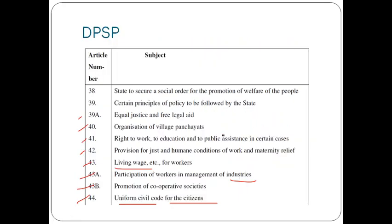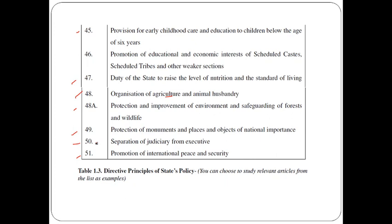Just go through these articles, and when you look at the meaning of each of them, you understand that these are ideals we want in order to bring justice and equality in the society. These are the core and heart of many of the human rights that we have learned. So if the government brings all these policies into practice through various laws and schemes, we will be able to have equality and justice in society.